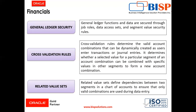Then comes the related value sets. Related value sets define dependencies between two segments in a chart of accounts to ensure that only valid combinations are used during data entry. Related value sets are the independent type of value sets whose values are related to another independent type value set. With related value sets, a chart of account segment value choice list automatically displays a list of related values based on what value was selected in the preceding segment.